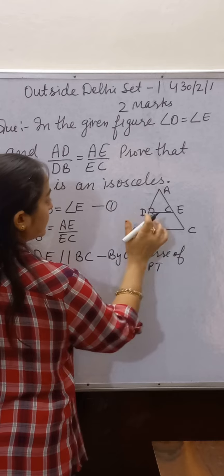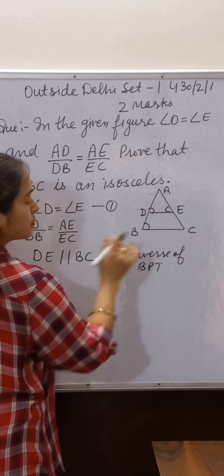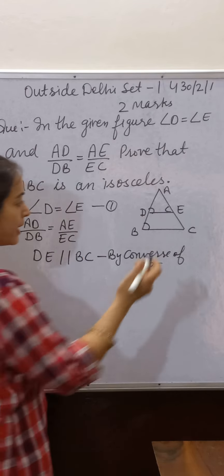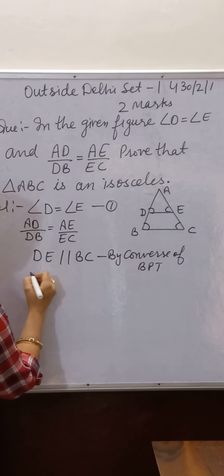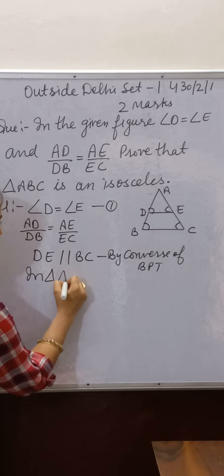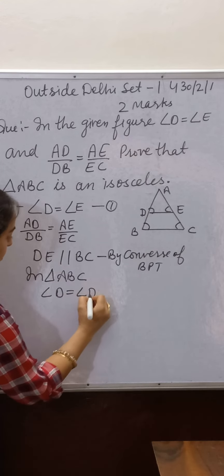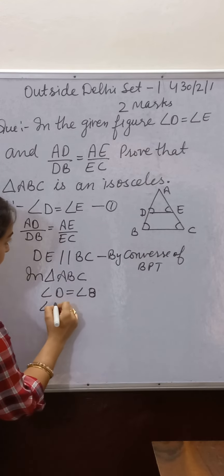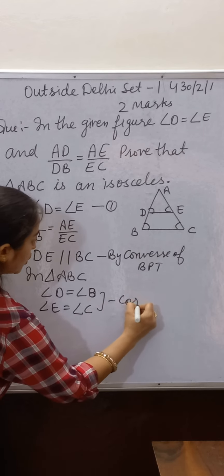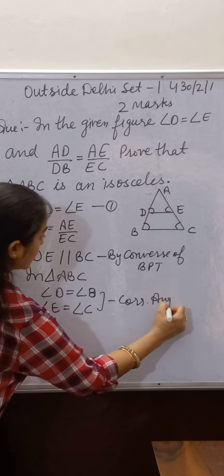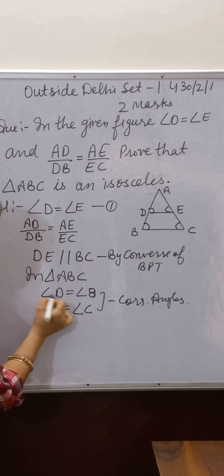Since DE is parallel to BC, angle D is equal to angle B because of corresponding angles, and angle E is equal to angle C because of corresponding angles. In triangle ABC, angle D equals angle B and angle E equals angle C due to corresponding angles.